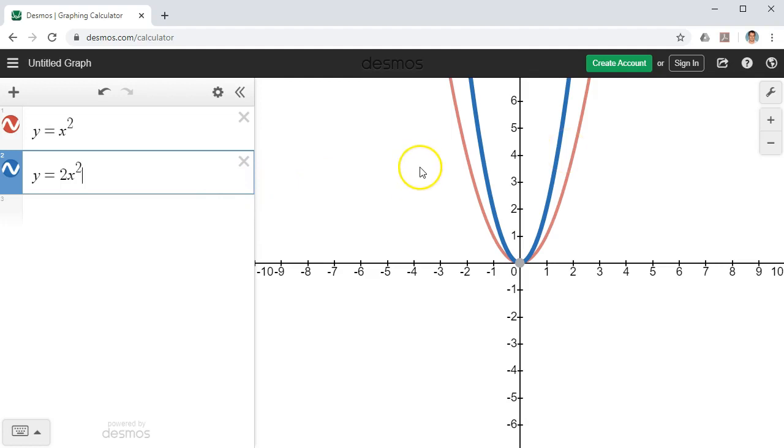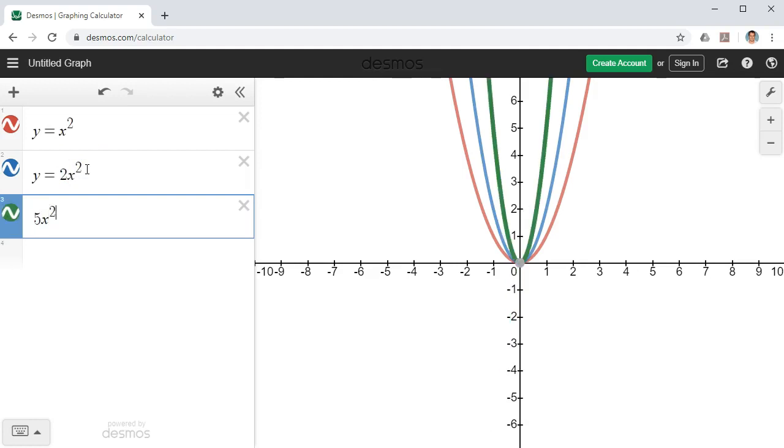So by observing this, I reckon that if I make the number bigger in front of x squared, it's going to make it thinner. So let's test that. Let's try 5x squared, remembering I don't have to put y equals at the front all the time. And when I do that, I get my green graph, which is thinner again.